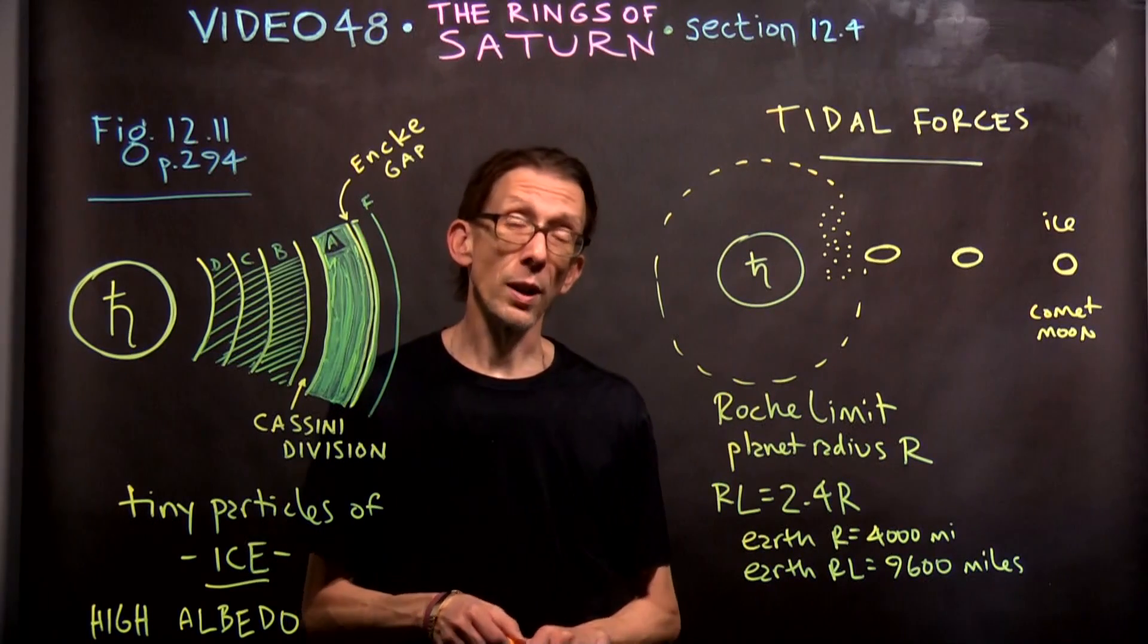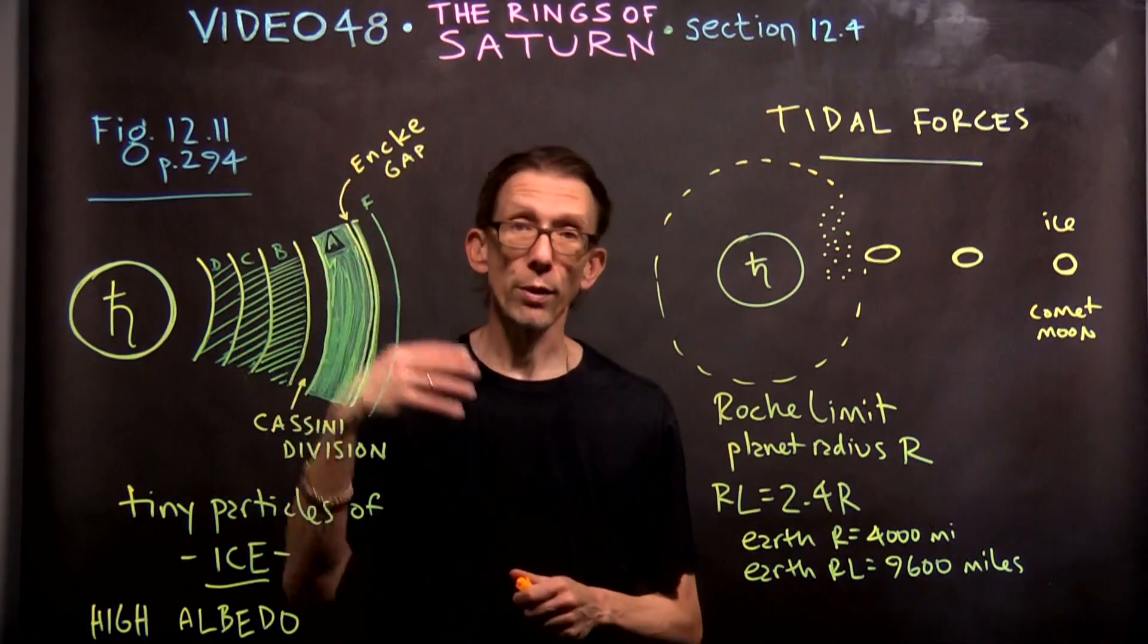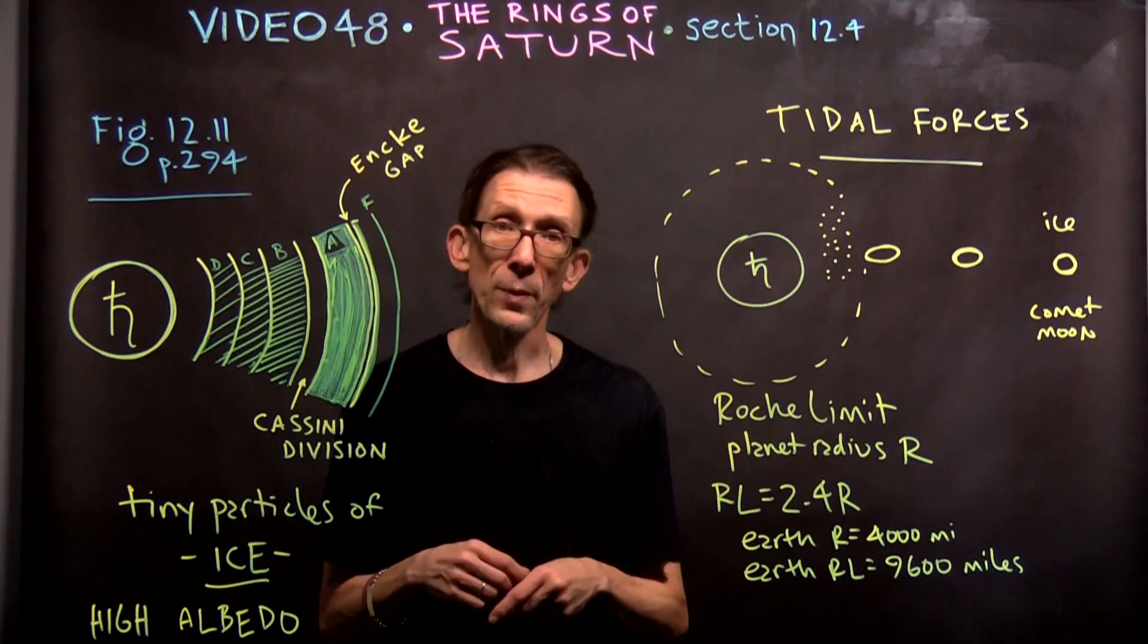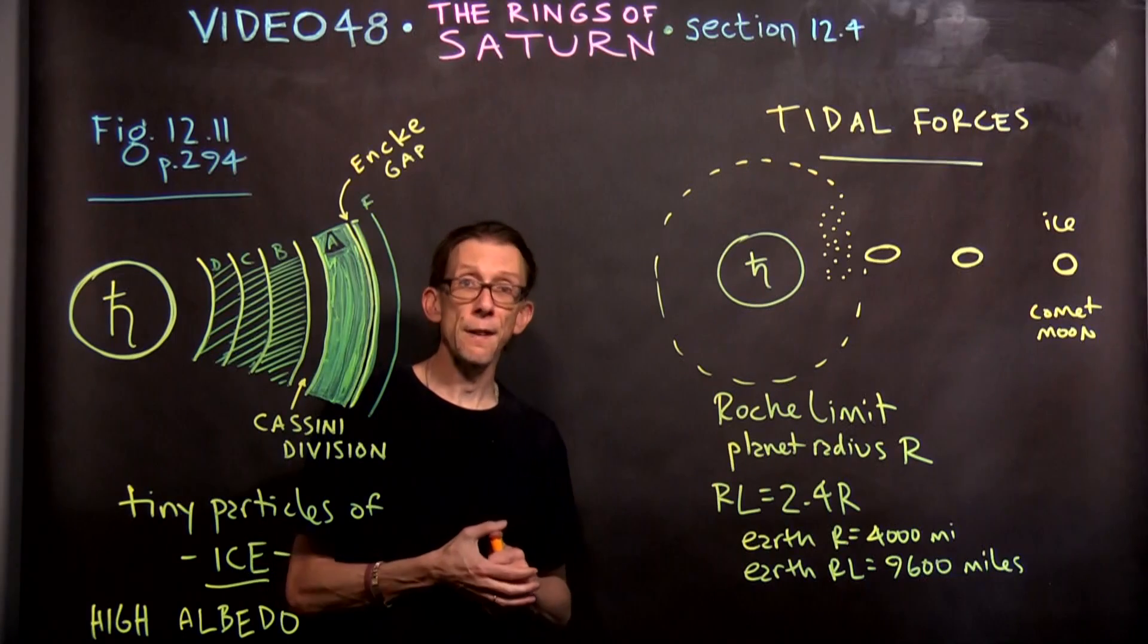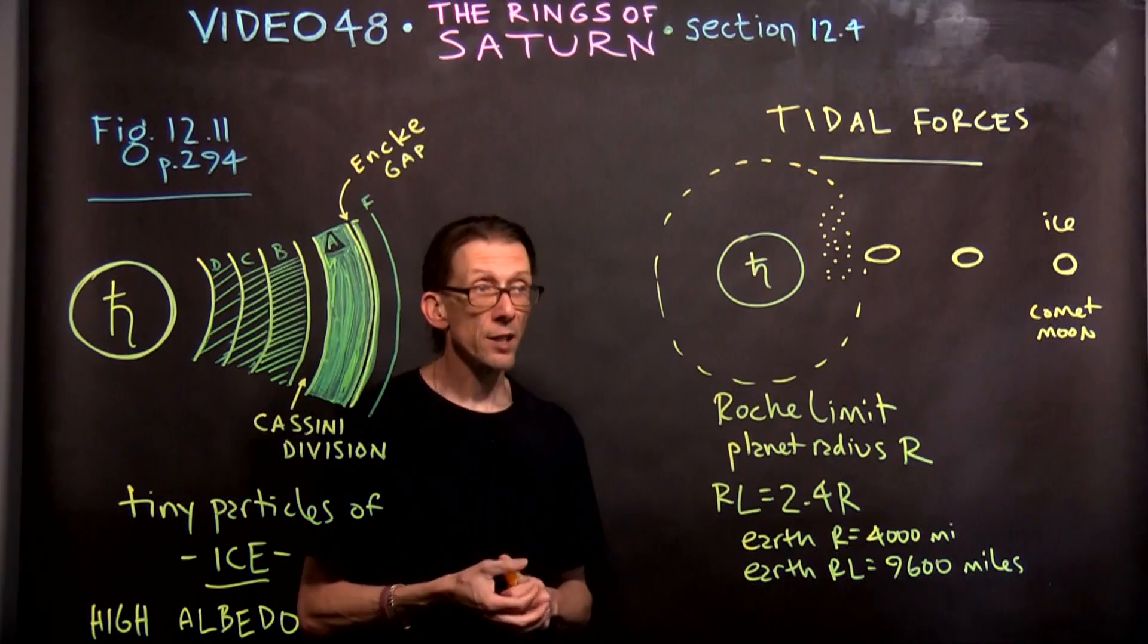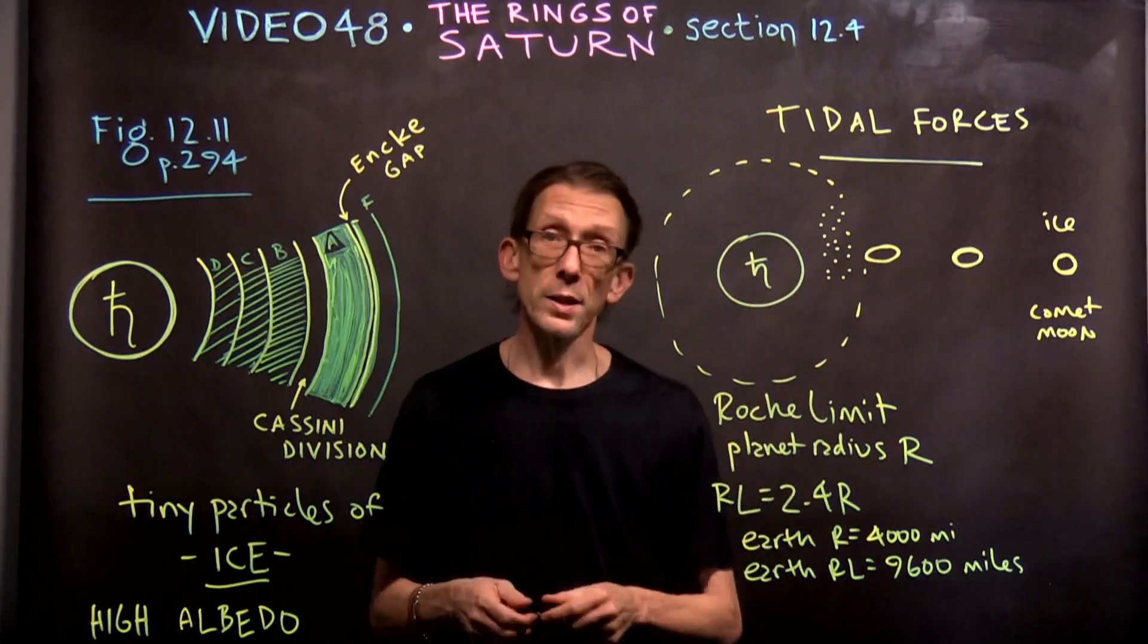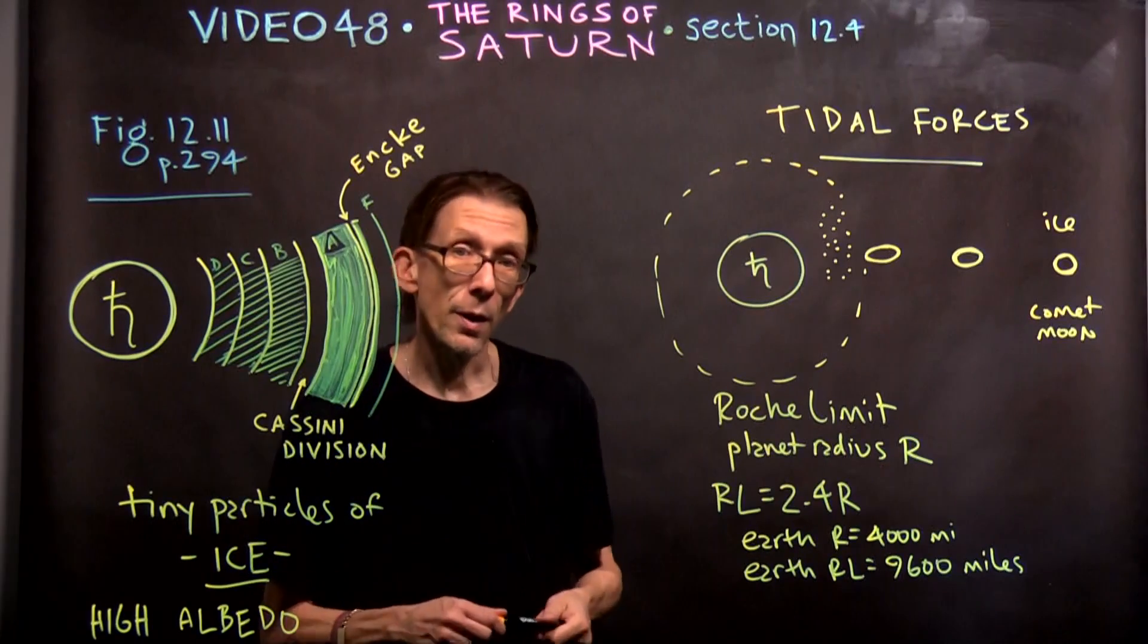And also we think that the rings are leaking. They're losing these little particles all the time. And they're very, they're not massive at all. The total mass of the rings is very, very, very small. Consistent with the idea that it was an icy moon or comet that shattered.